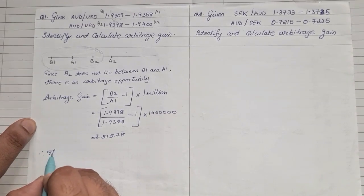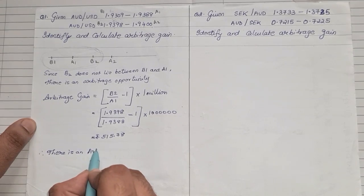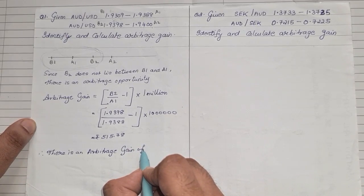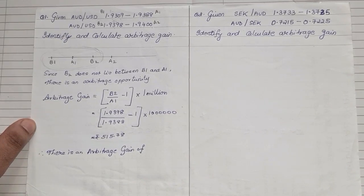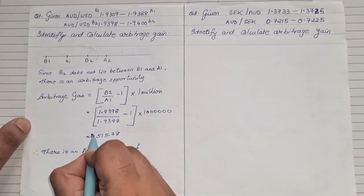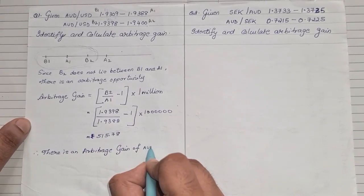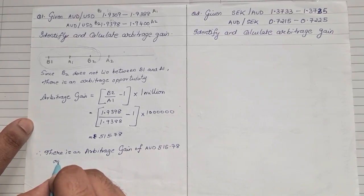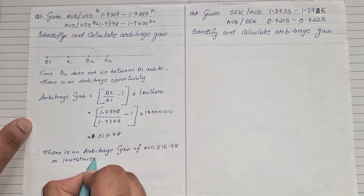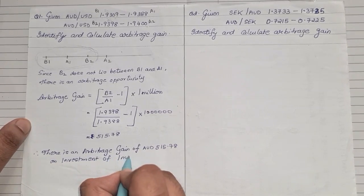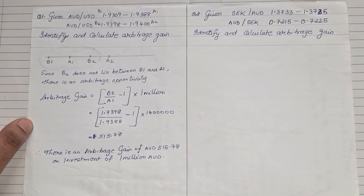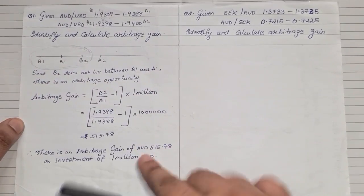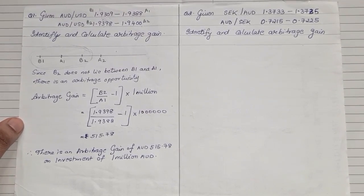Therefore, there is an arbitrage gain of AUD 515.78. This is how you solve the first sum. Once you understand this number line method, the rest is simple. Now let us check the second sum.